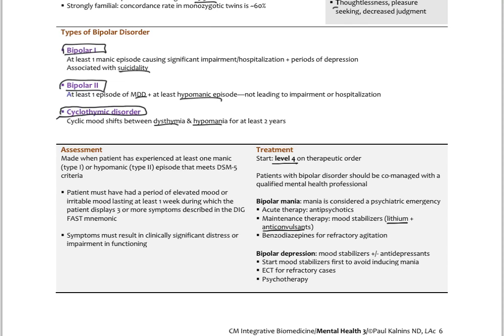Manic episodes are considered a psychiatric emergency. In addition to lithium and anticonvulsants, antipsychotics may be added; benzodiazepines are sometimes used for refractory agitation. For bipolar depression, mood stabilizers must be started first to avoid triggering mania, before adding antidepressants. Lithium carbonate is the most commonly used agent. ECT has been used for refractory cases. Psychotherapy, while part of the package, provides insight and helps patients know when to seek help.